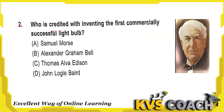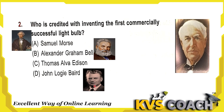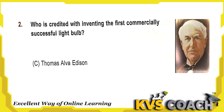Second question: who is credited with inventing the first commercially successful light bulb? Option A is Samuel Morse — he developed the electric telegraph. Option B is Alexander Graham Bell — he invented the first practical telephone. Option C is Thomas Alva Edison — he invented the light bulb. Option D is John Logie Baird — he demonstrated live working television. So the right answer is Thomas Alva Edison.